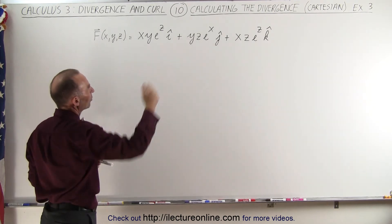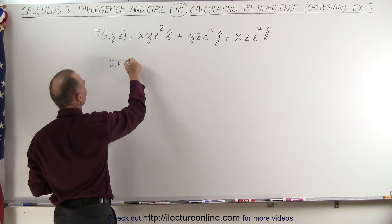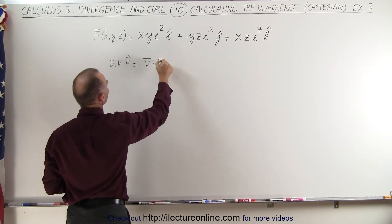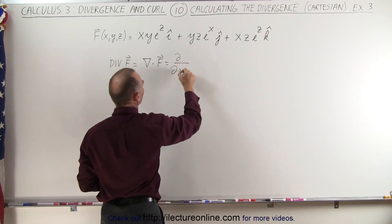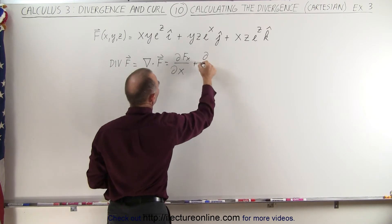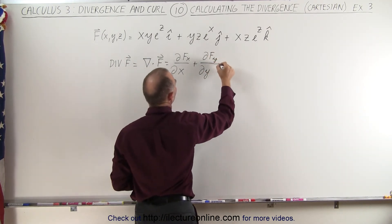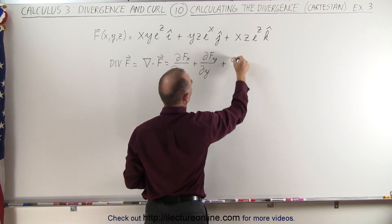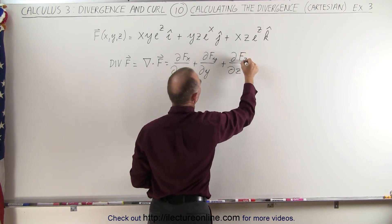We have an x, a y, and a z component. So the divergence of this vector field, we can write it like this: it is equal to the partial derivative with respect to x of the x component, plus the partial derivative with respect to y of the y component of the vector field, plus the partial derivative with respect to z of the z component.